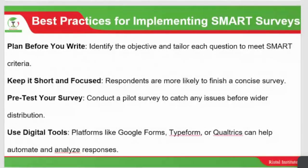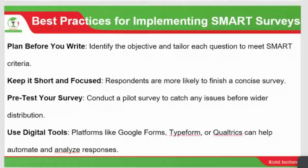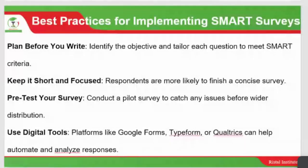For standard questionnaires like the Household Dietary Diversity Score, Coping Strategy Index, or the Mini Nutrition Assessment — the MNA — used to get the nutritional status of the elderly, there is not much to change. But there is always room for adapting existing tools. Best practices for implementing SMART surveys: plan before you write, identify the objective, tailor each question to meet the SMART criteria. Keep it short — keep it short — keep it short. Test your survey and conduct a pilot.